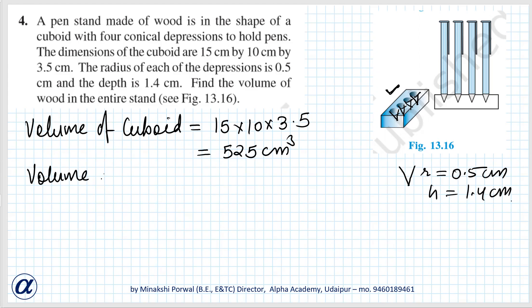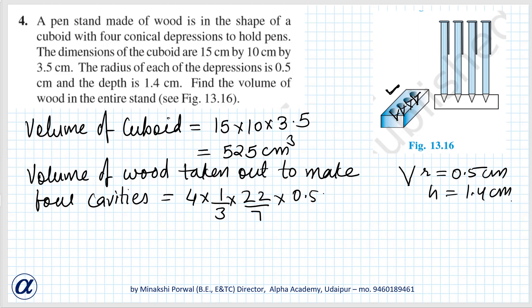Volume of wood taken out to make four cavities is equal to 4 into volume of cone, that is 1 by 3 pi r square, that is 0.5 into 0.5, and h that is 1.4.